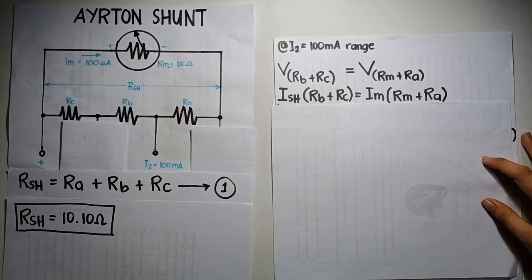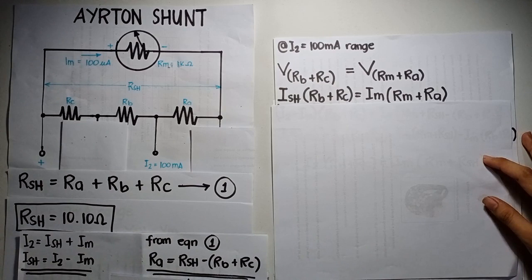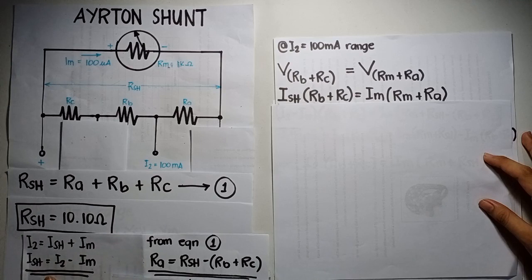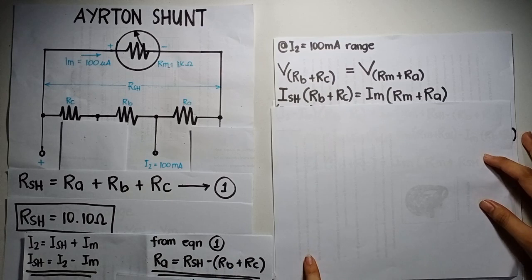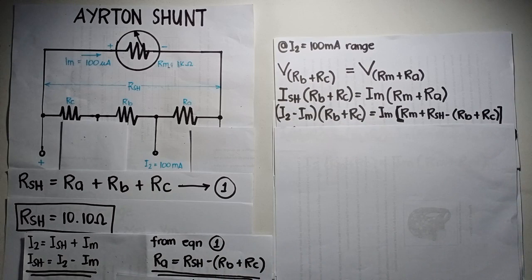Since we don't have the value for ISH and Ra, based on the circuit, ISH is equal to I2 minus Im. And based on the first equation, Ra is equal to RSH minus Rb plus Rc. By distributive property, we can come up to this equation.